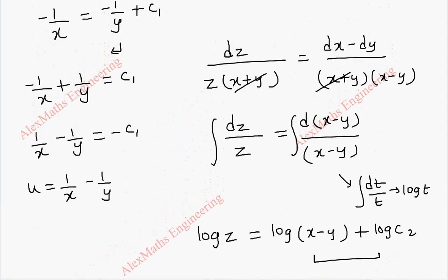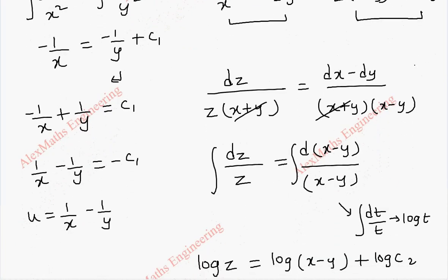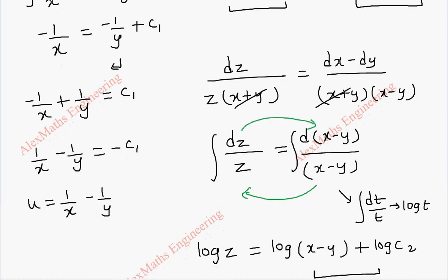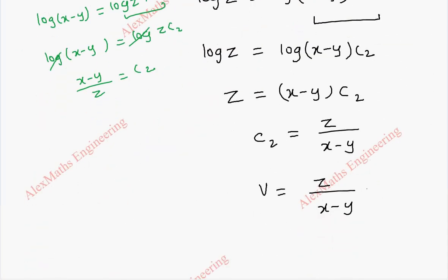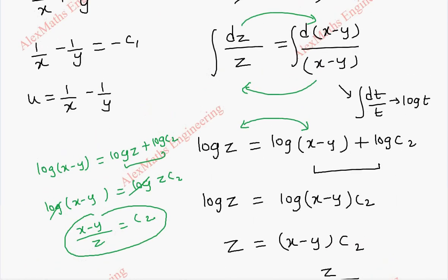So, here even in the last problem we face a small problem at the end. Suppose if this entire term is here and this entire term is here, what will happen is these two terms will interchange. That is I will be getting log of x minus y equal to log z plus log c2. Now, using log rule if I combine, log x minus y is equal to log of z into c2. After removing log, x minus y by z will be our c2. But here we have its reciprocal. But as I told, both are equally valid. Either this or this, both are correct. It depends upon the term, how we take left hand side and right hand side.